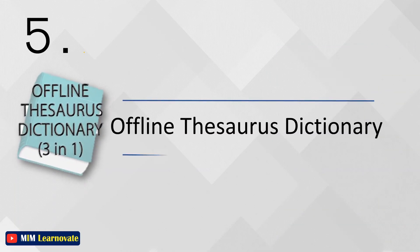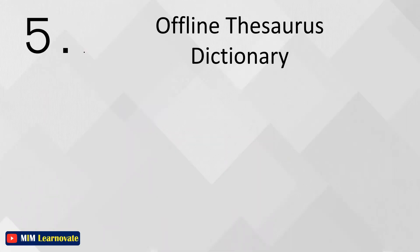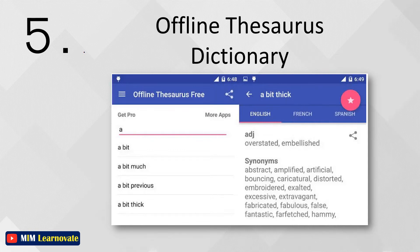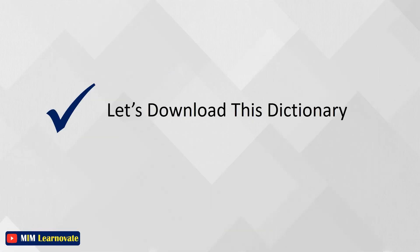The fifth app is Offline Thesaurus Dictionary. It is a three-in-one free dictionary and thesaurus containing over 150,000 words and their synonyms and antonyms in three languages: English, Spanish, and French. This dictionary contains no ads.